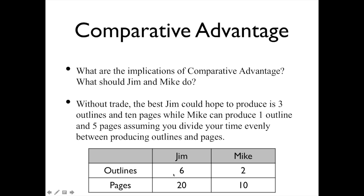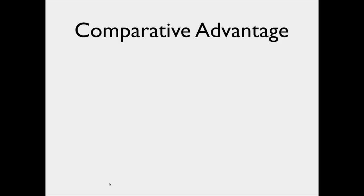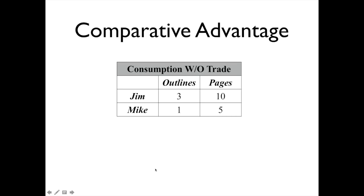If Jim spends half his time making outlines, he makes three; if he spends half his time making pages, he makes 10. If Mike spends half his time making outlines, he makes one; if he spends half his time making pages, he makes five. That is called our consumption possibility — the consumption possibility without trade.